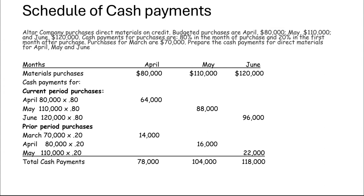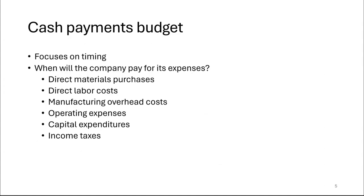Now we're going to put this all together in one schedule. The cash payment budget is very important because you need to do a cash budget to figure out: do I have to borrow money? You cannot wait until the end of the month and say we need money to meet payroll — you can't run a business like that. You have to anticipate these things. You have to look at when you're going to pay for all the different transactions, whether you plan on making any big purchases, or if you have big property tax or income tax expenses. You have to put that all in your calculation.